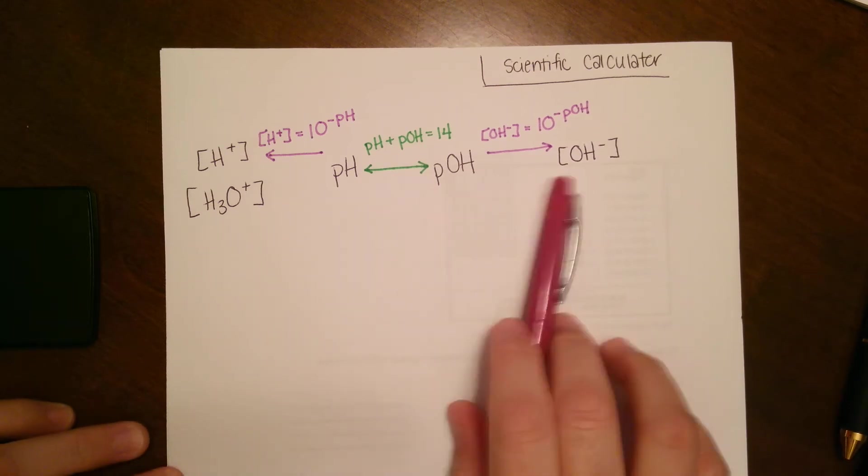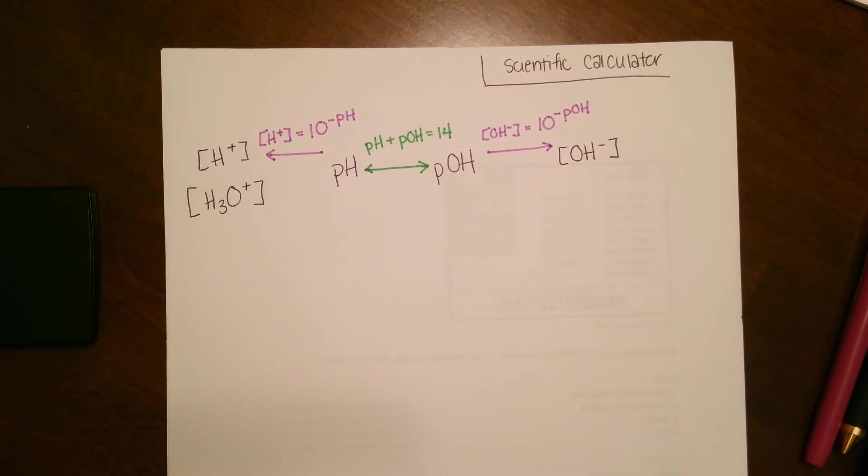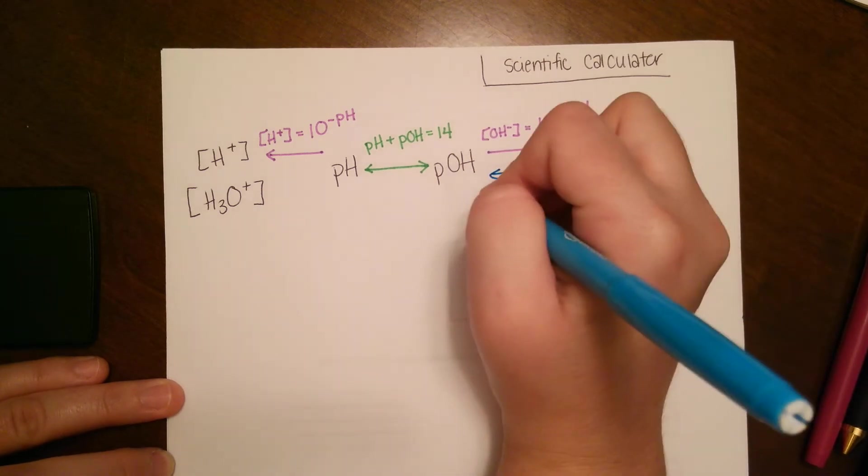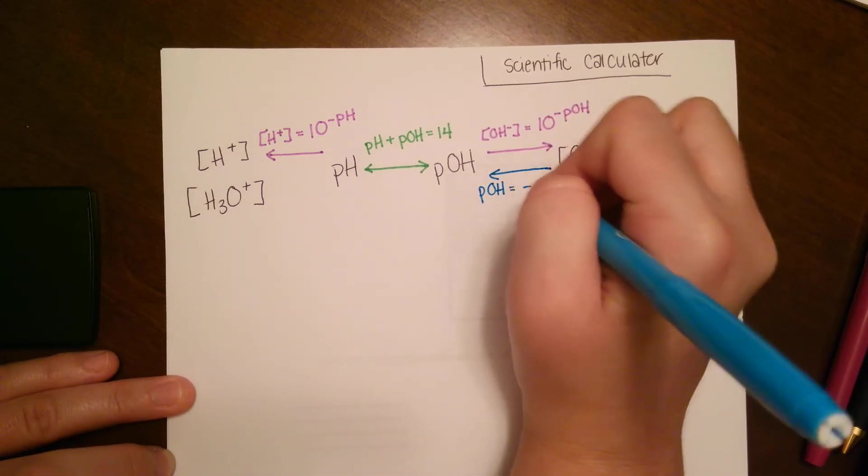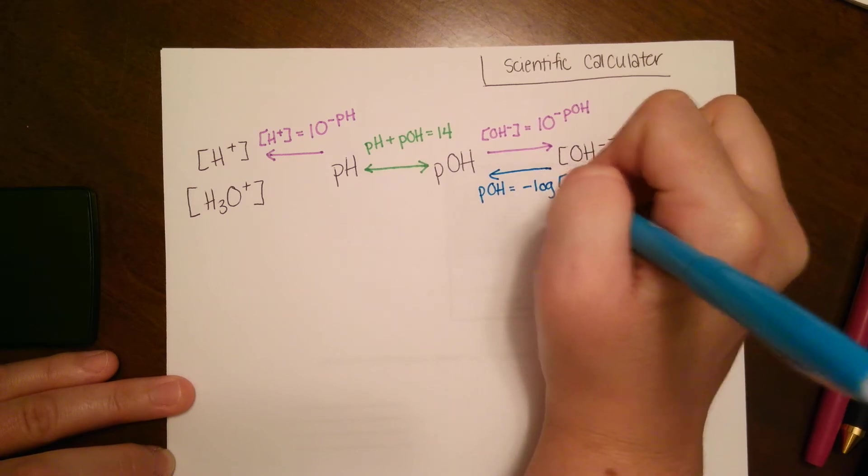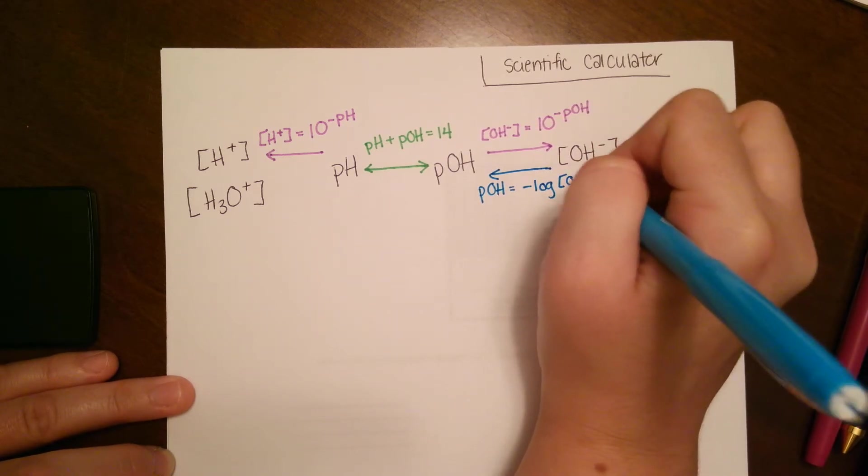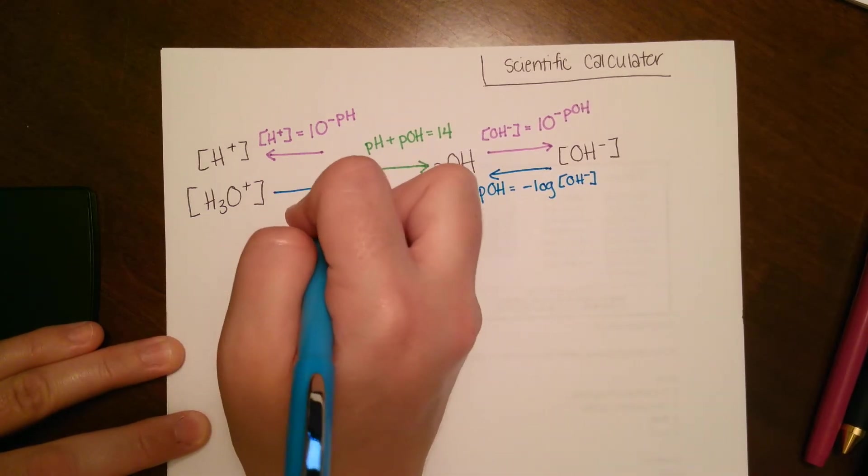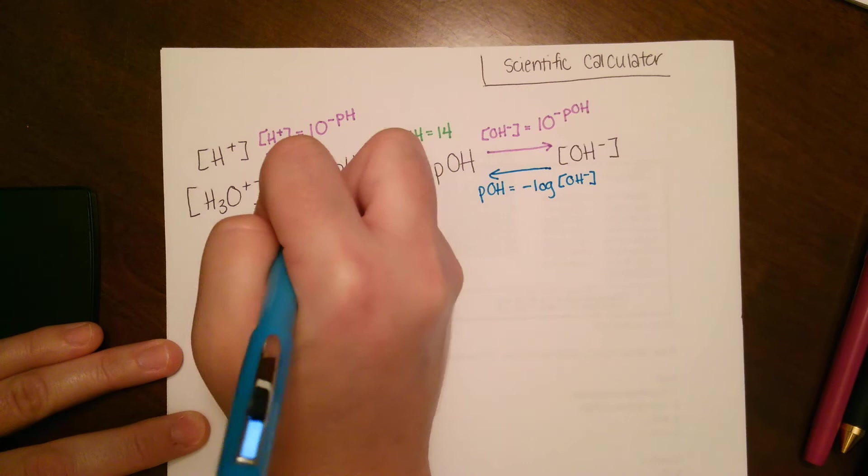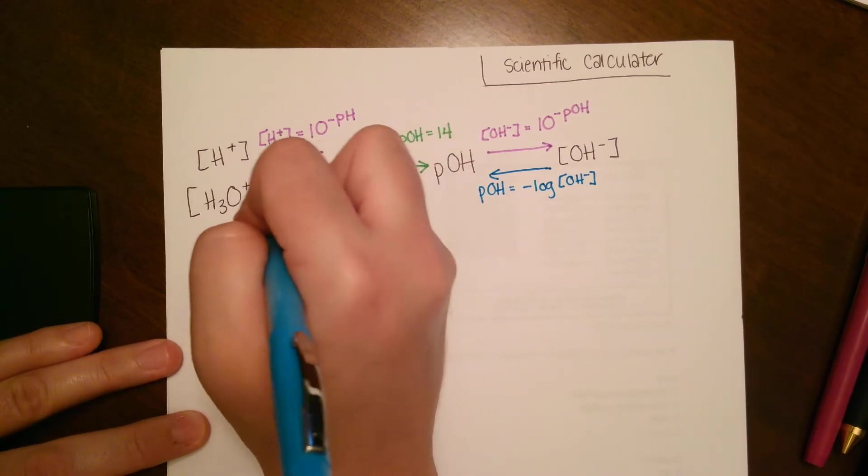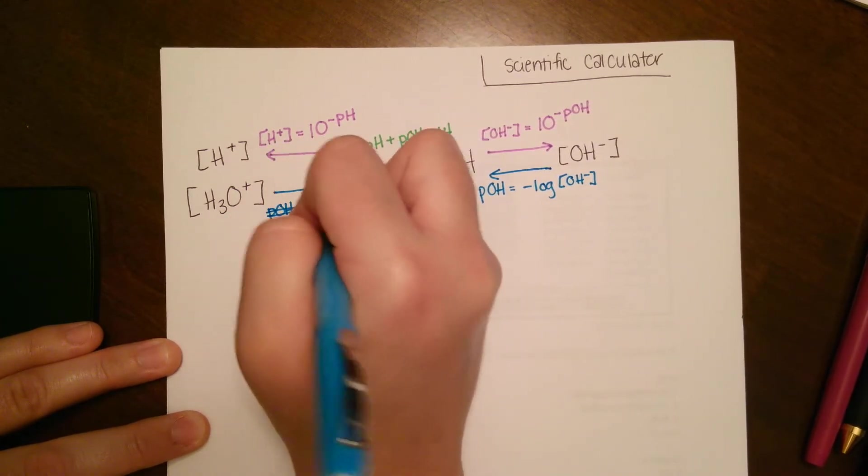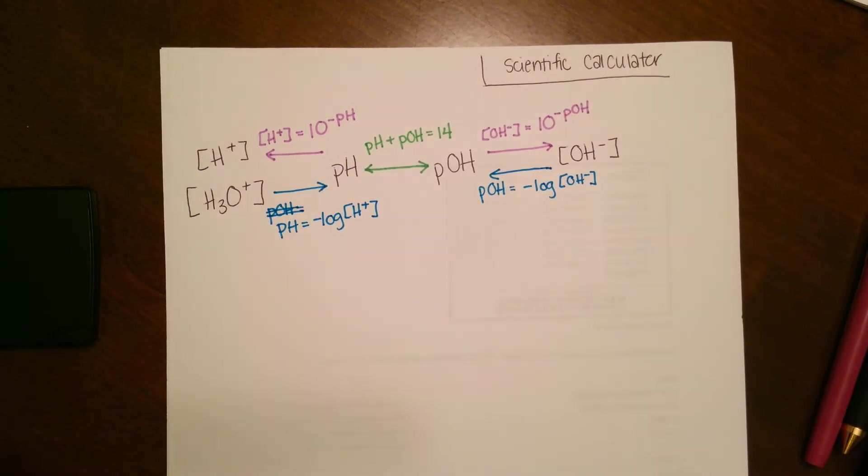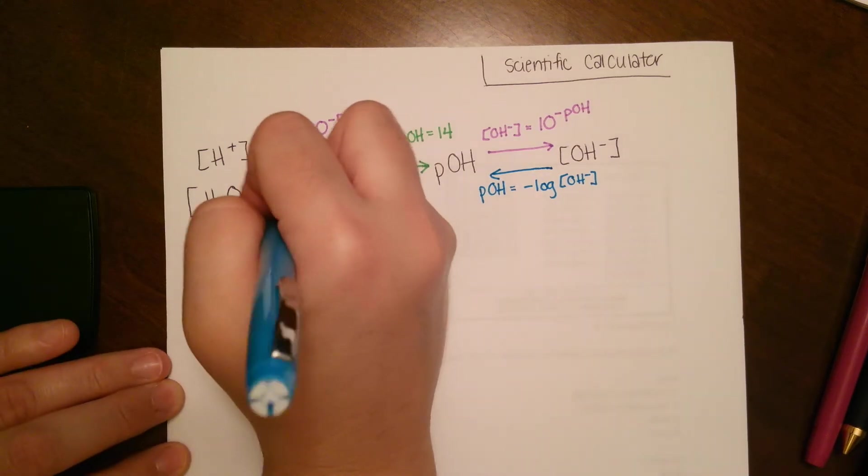There is another option: you can go inwards from hydroxide to pOH. For that one our pOH equals the negative log of hydroxide. And the same thing is mirrored on the other side. The pH equals the negative log of hydronium. Those are our equations we're going to use.